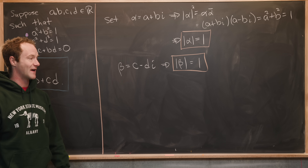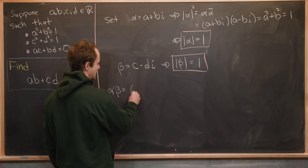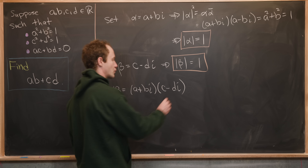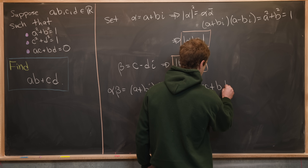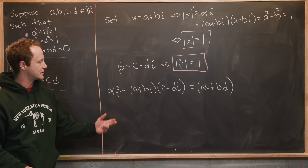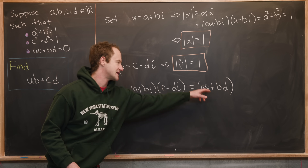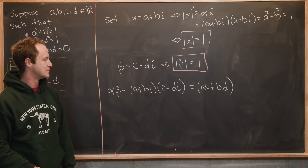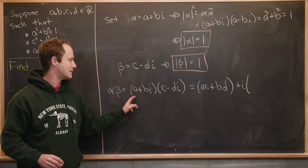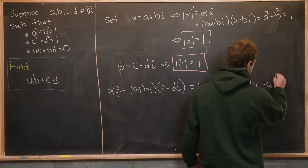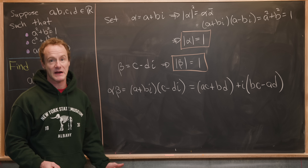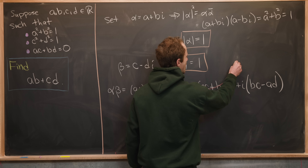Next, take the product alpha times beta, which equals a plus bi times c minus di. Multiplying out, the real part is ac plus bd — that comes from a times c, and from bi times negative di giving negative bd times i squared, so the minus signs cancel giving a plus. Then we have plus i times bc minus ad. Since we're given that ac plus bd equals zero, that real part cancels to zero.